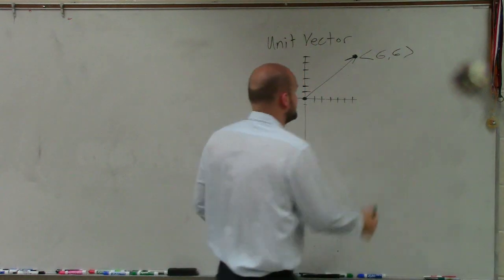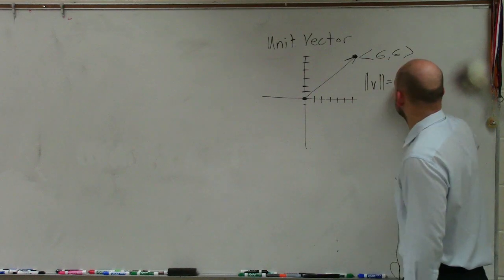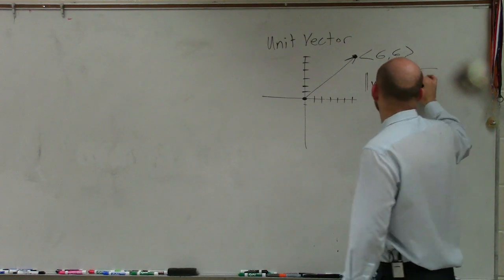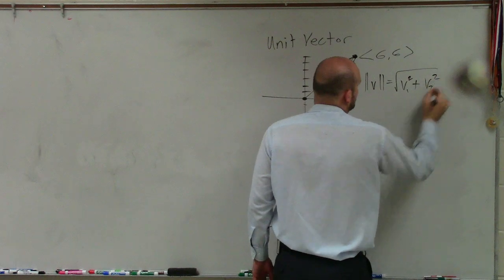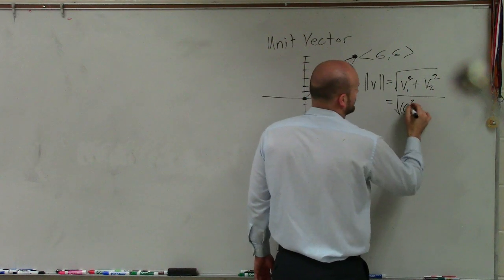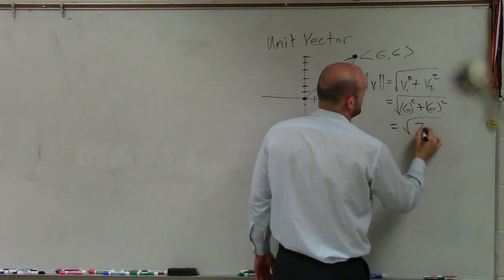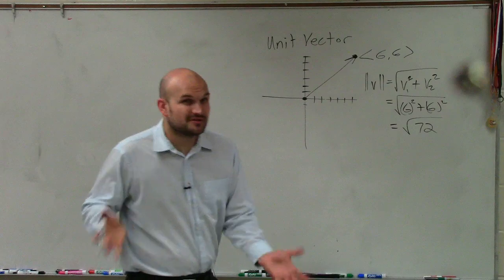Now, again, to find the magnitude, we take v is going to equal the square root of v1 squared plus v2 squared. Well, in this case, if I was going to find the magnitude, I would have 6 squared plus 6 squared, which equals the square root of 72. So the magnitude is the square root of 72.